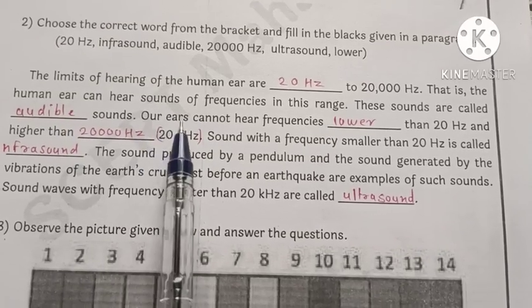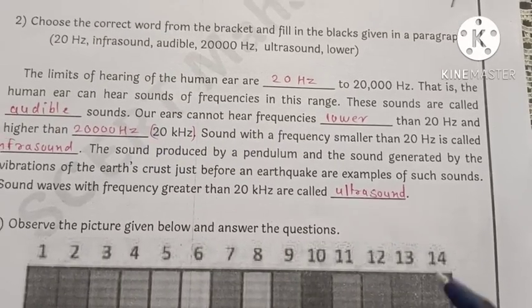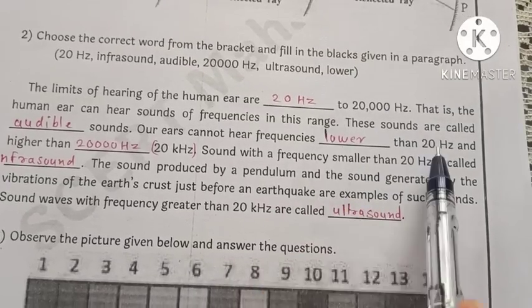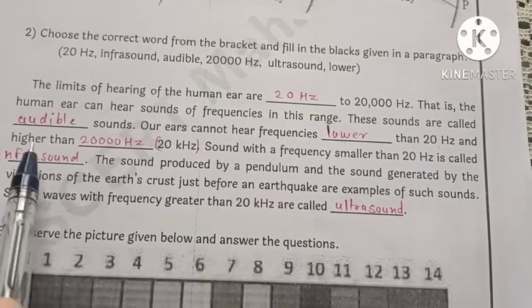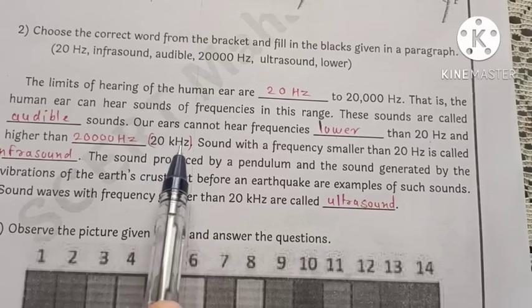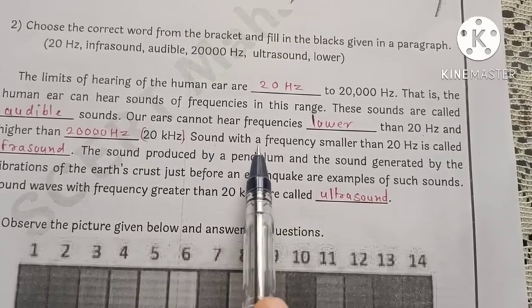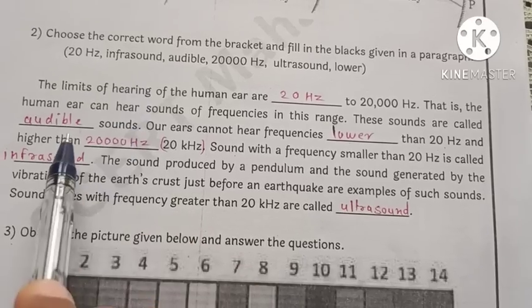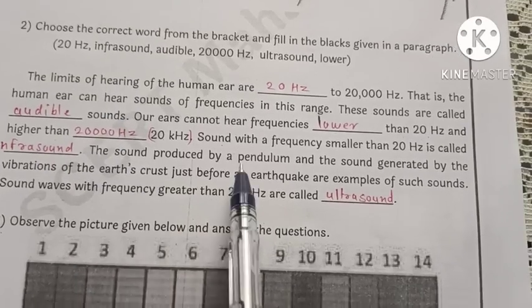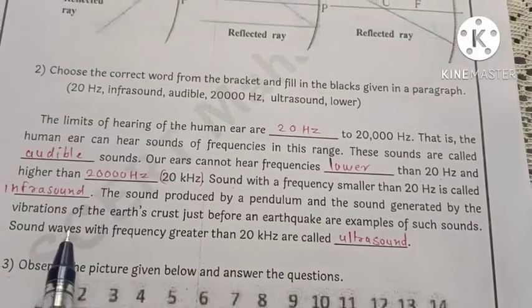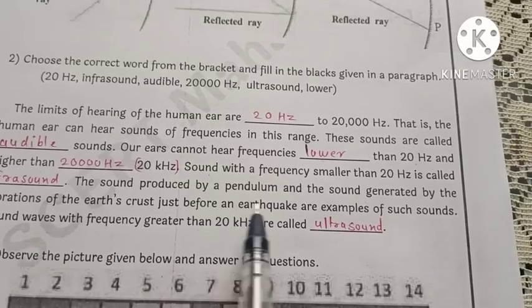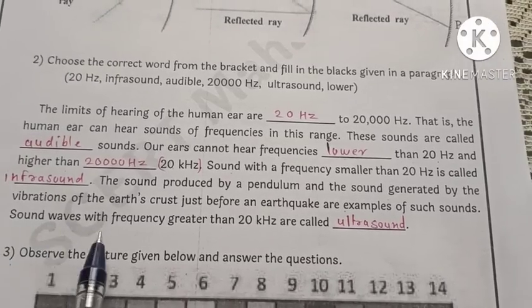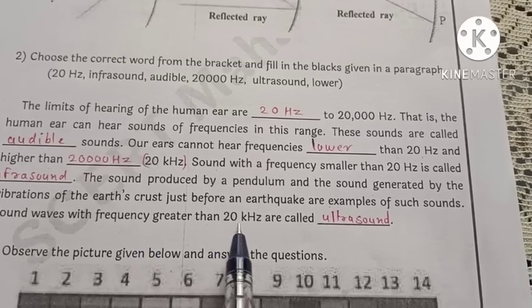Our ears cannot hear frequencies lower than 20 Hz and higher than 20,000 Hz, that is 20 kHz. Sound with frequency smaller than 20 Hz is called infrasound. The sound produced by a pendulum and the sound generated by vibration of the earth just before an earthquake are examples of such sound. And sound waves with frequency greater than 20 kHz are called ultrasound.